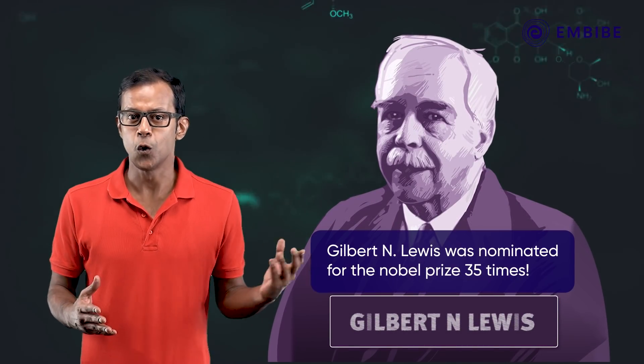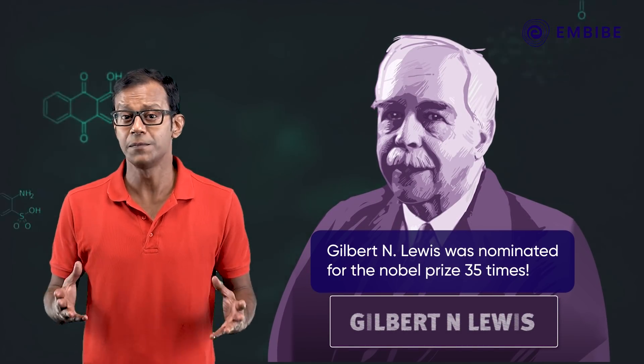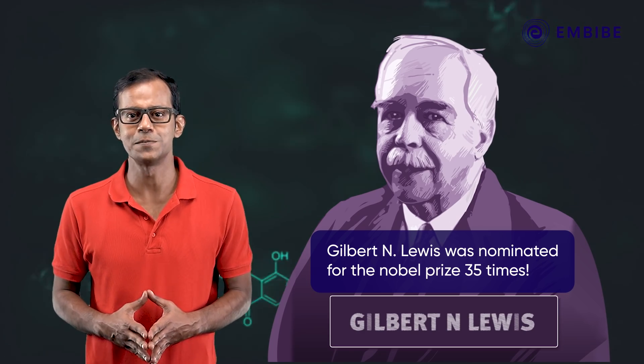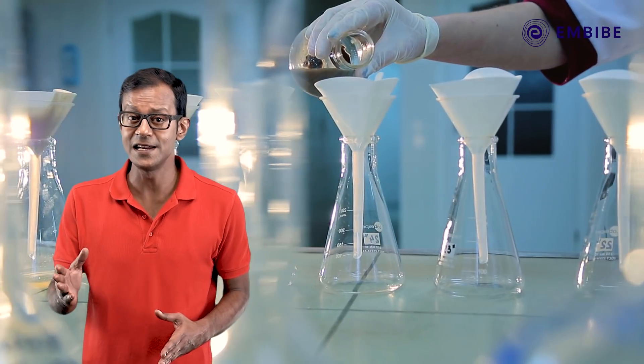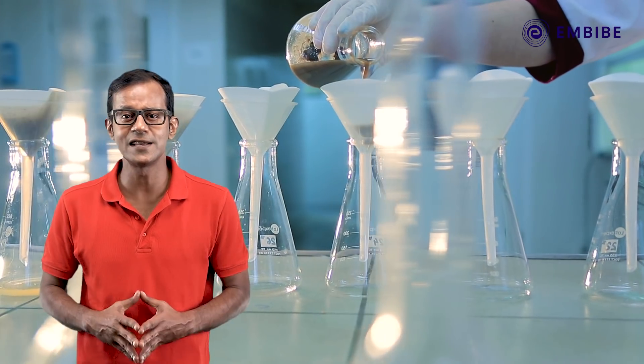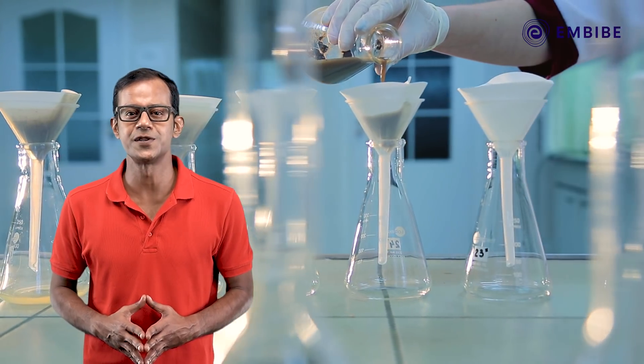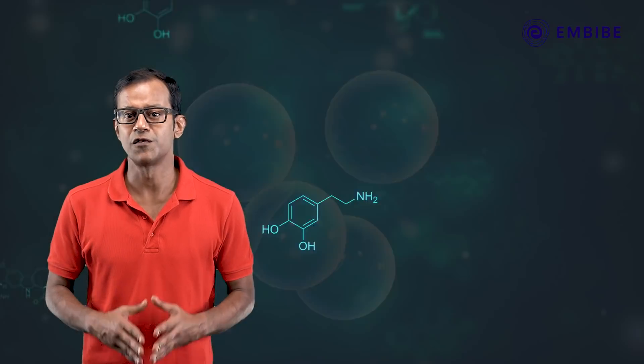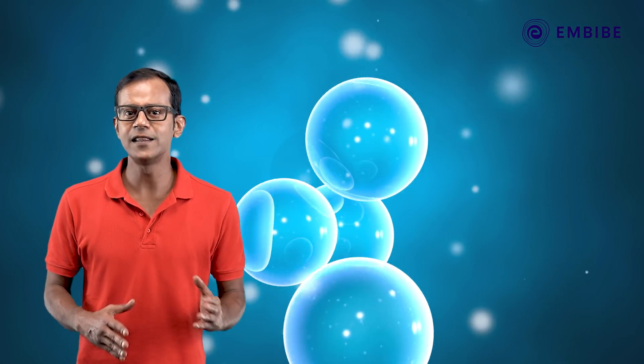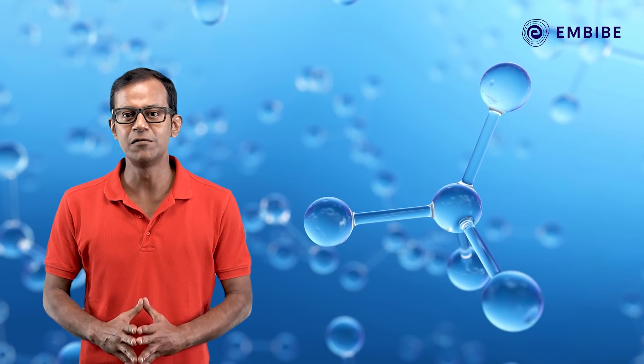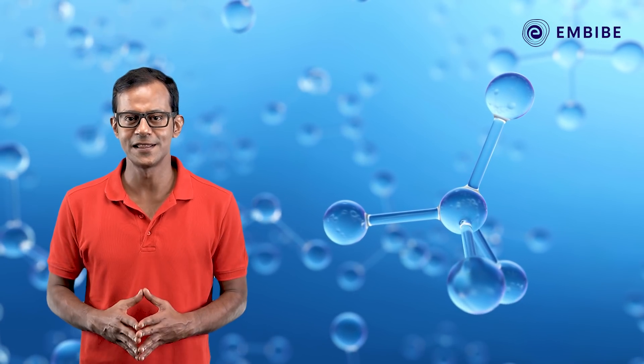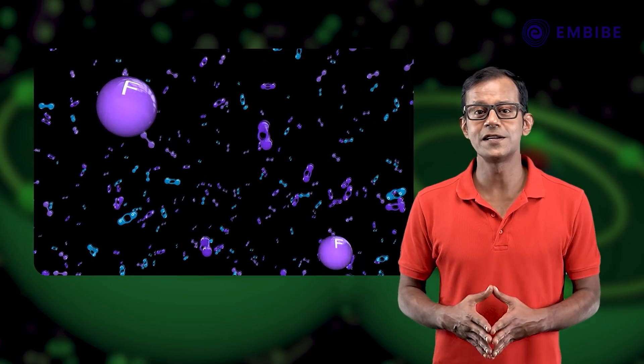Gilbert Lewis was an American physical chemist who was nominated for the Nobel Prize 35 times. Unfortunately, he never got one, but he did leave behind his legacy in the field of chemistry. In this video, we will be studying different types of covalent bonds and the contribution of Gilbert Lewis in representing them.